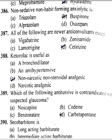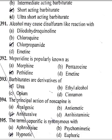All of the following are H1 anticonvulsants except cetirizine. Ketorolac is useful as a non-narcotic, non-steroidal analgesic. Which of the following antitussives is contraindicated with suspected glaucoma? Carbetapentane. Secobarbitone is an ultra-short-acting barbiturate. Alcohol may cause a disulfiram-like reaction with chlorpropamide.